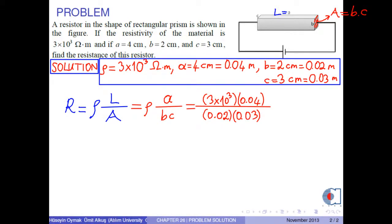Therefore, we obtain the resistance of this resistor as 2 times 10 to the 5 ohms, or 200 kilo ohms, because 1 kilo is 10 to the 3.